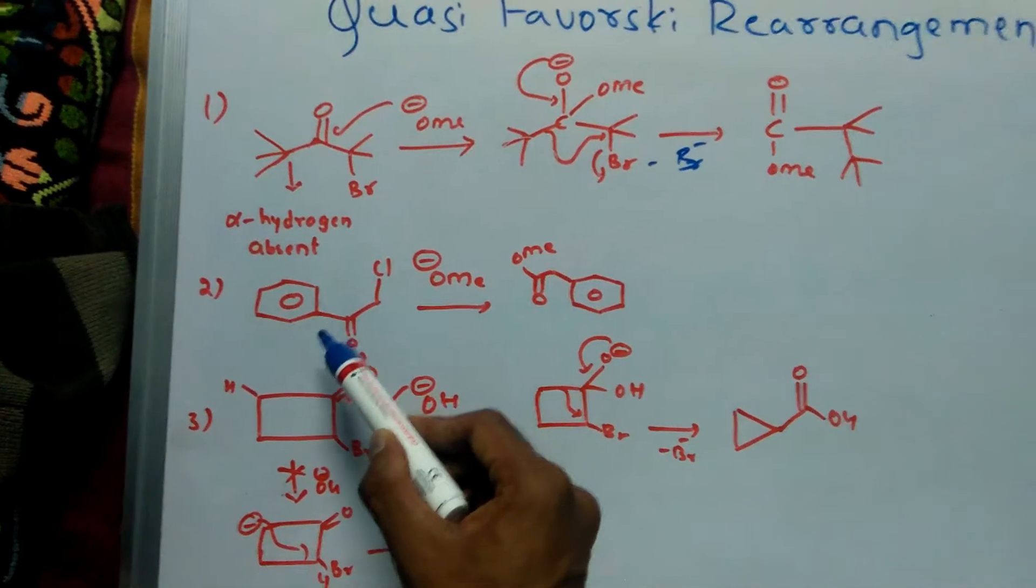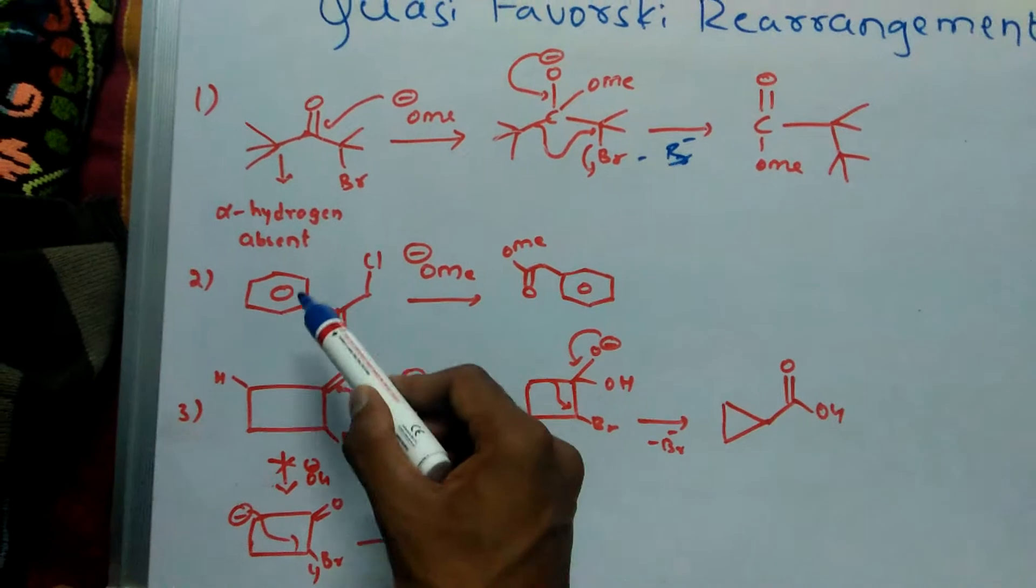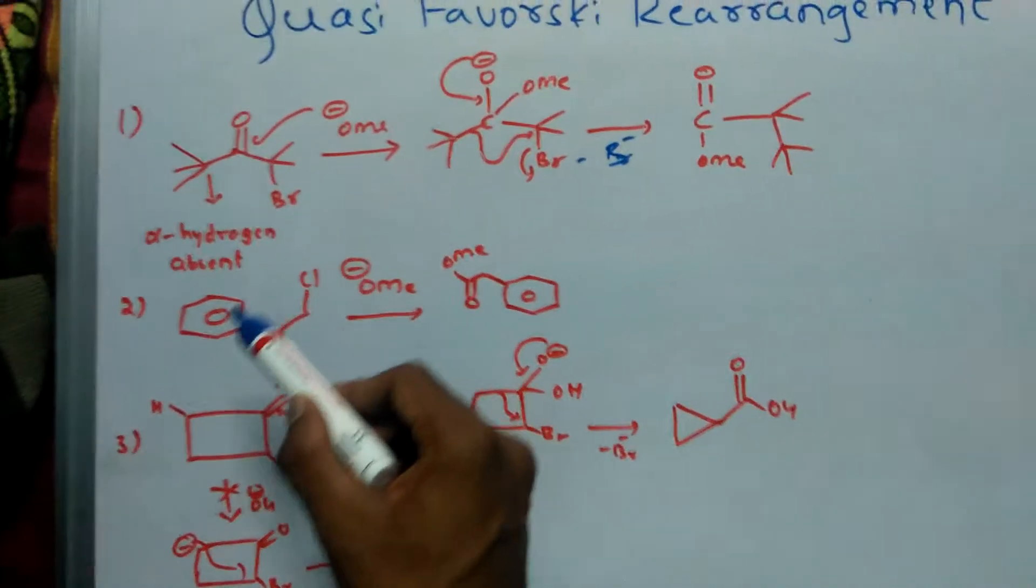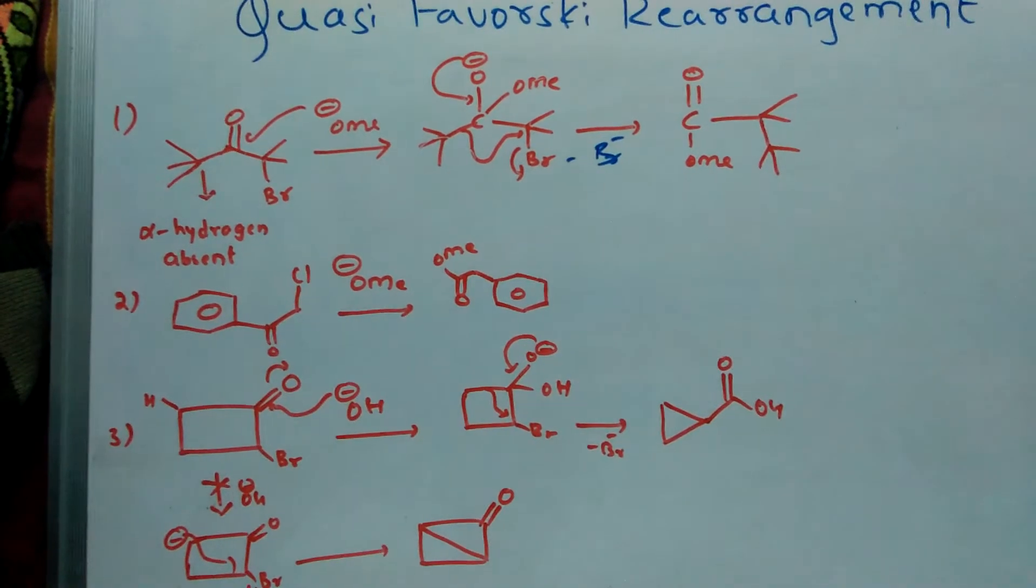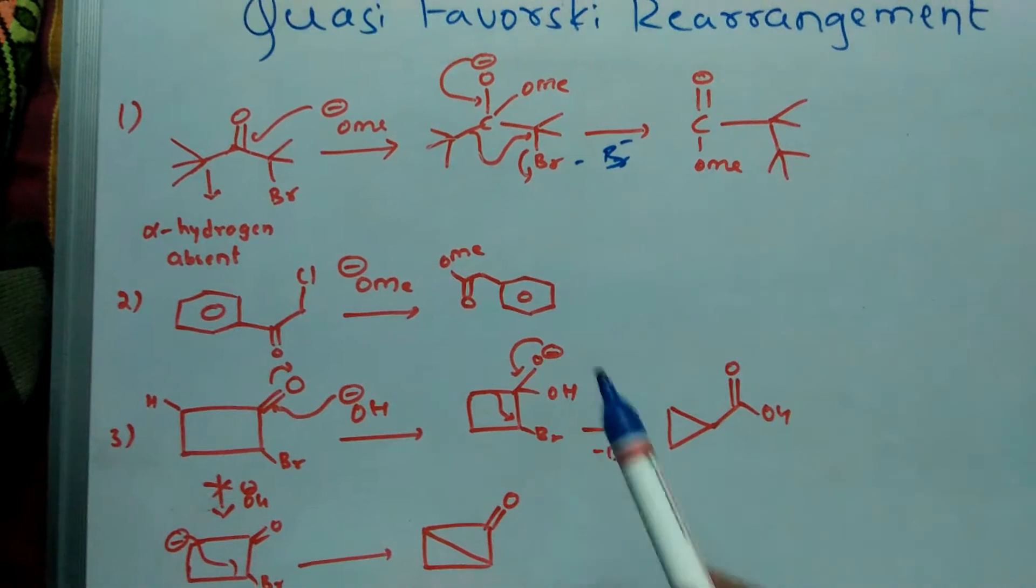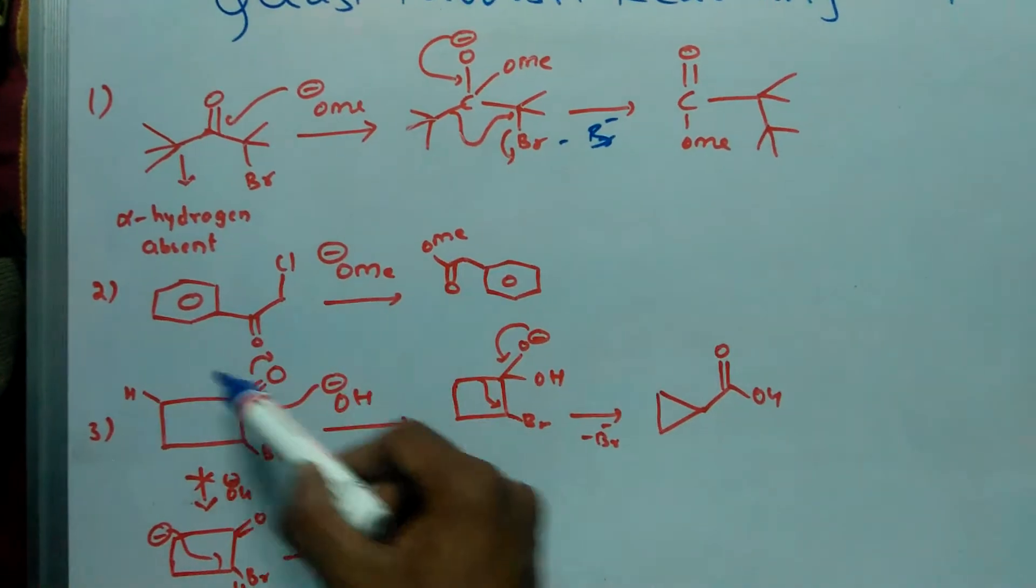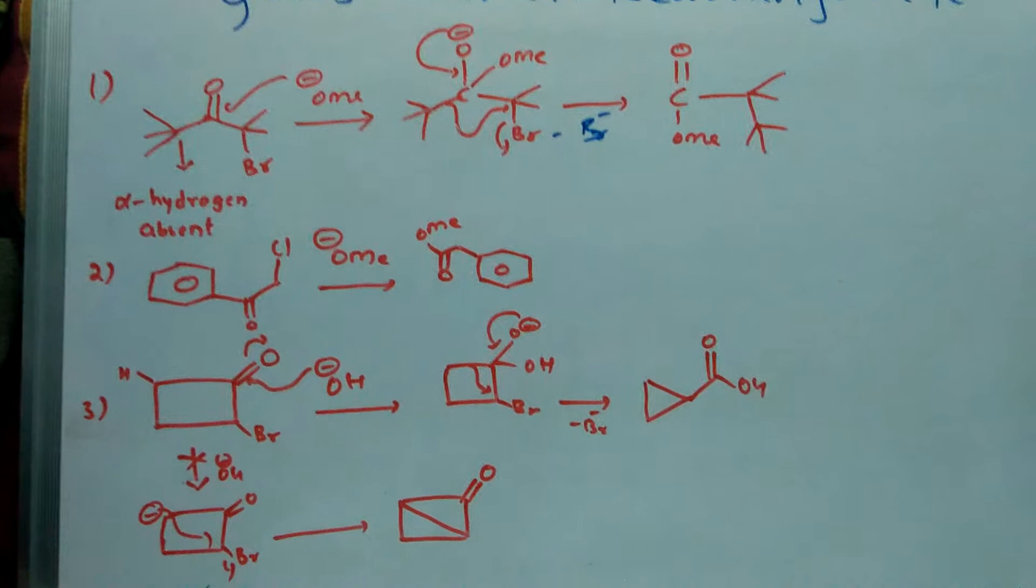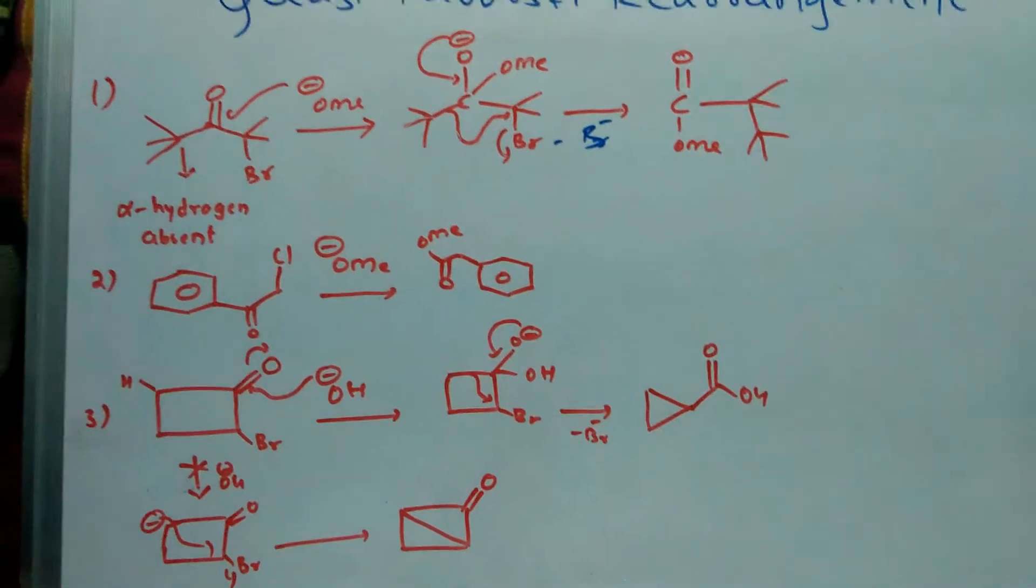Here also there is no alpha-hydrogen, so it migrates towards this and this product will form. And an interesting example.